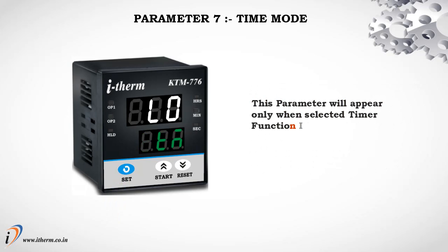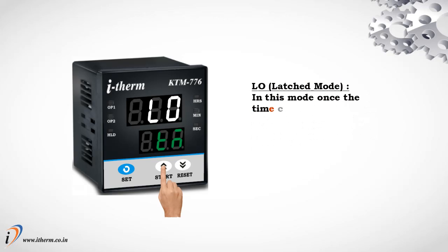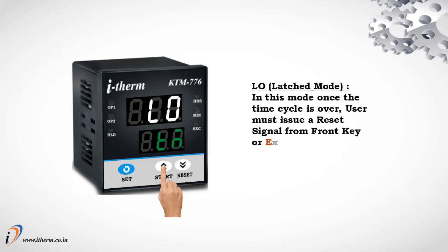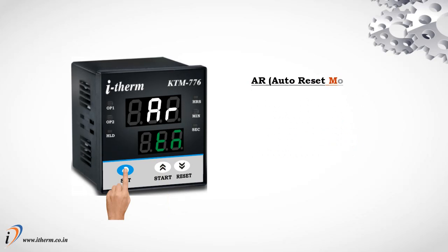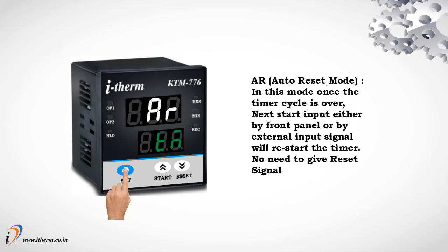Parameter 7: Time Mode. This parameter will appear only when the selected timer function is On Delay or Off Delay and the start input is other than Power On Start. Latched Mode: once the time cycle is over, the user must issue a reset signal from the front key or external reset input to restart the timer. Auto Reset Mode: once the timer cycle is over, the next start input — either by front panel or external input signal — will restart the timer.